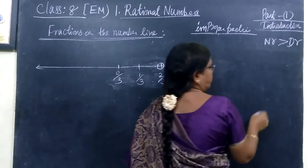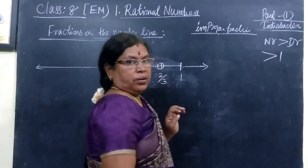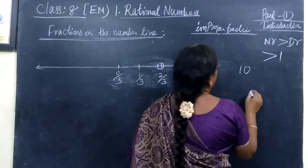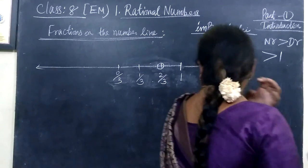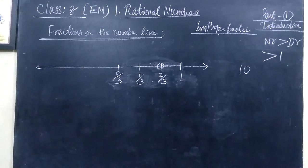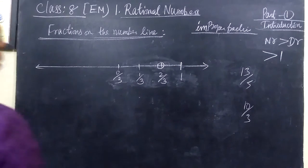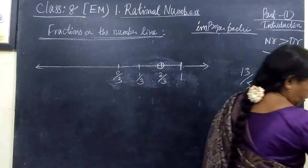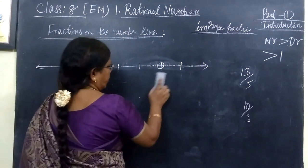13 by 5, 10 by 3. So now we want to mark this improper fraction on the number line. So suddenly we can't do it.